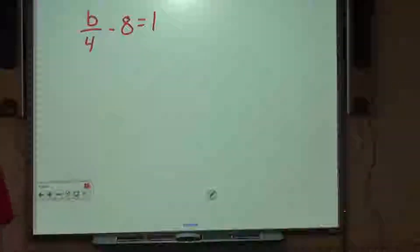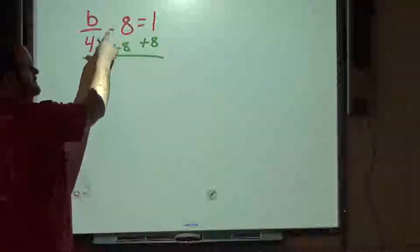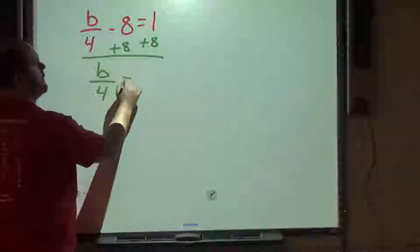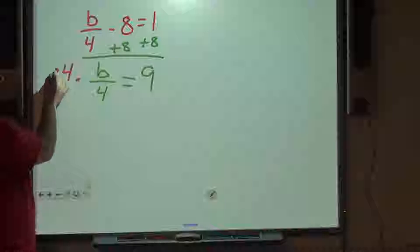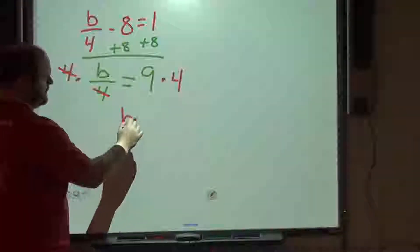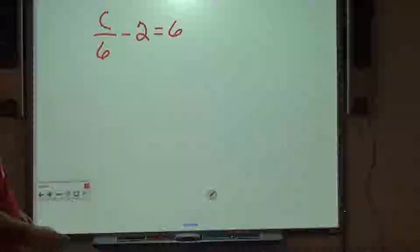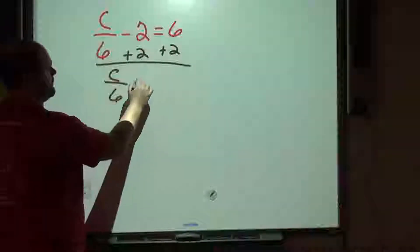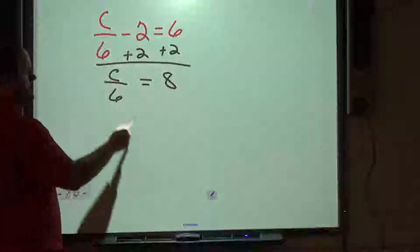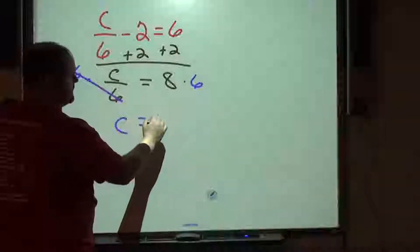Next problem — now we have division; it's still a two-step equation. Always get rid of the attachment first. The attachment is negative 8, so we add — inverse operation, opposite operation, the two signs should be different. We're left with b over 4 equals 9. b over 4 is division; the inverse is multiplication, so multiply by 4 on both sides: b equals 36. For the next one, we add 2, giving c over 6 equals 8. Multiply by 6: c equals 48.